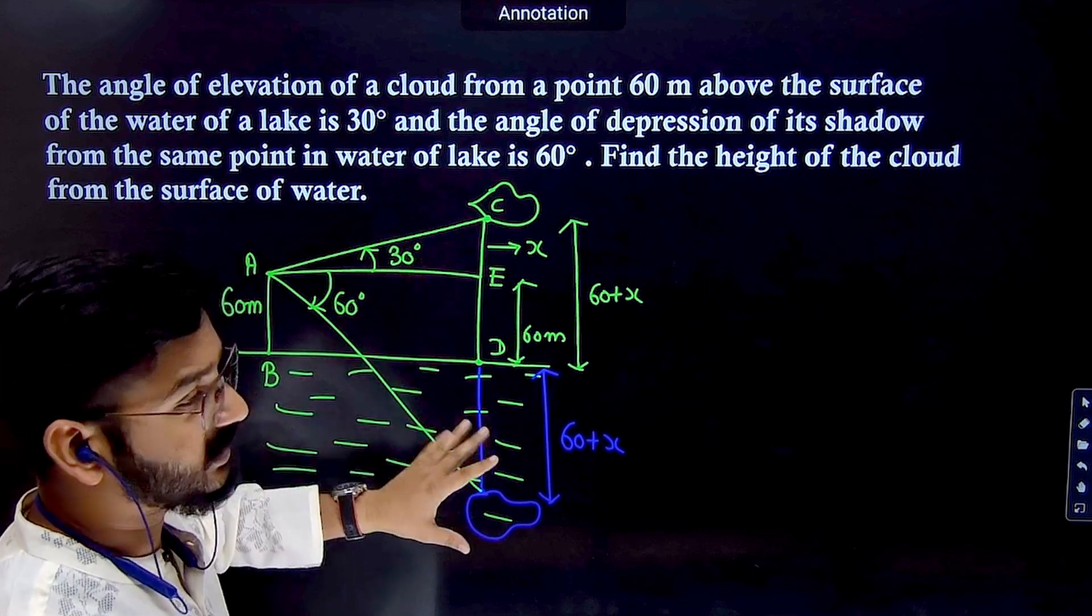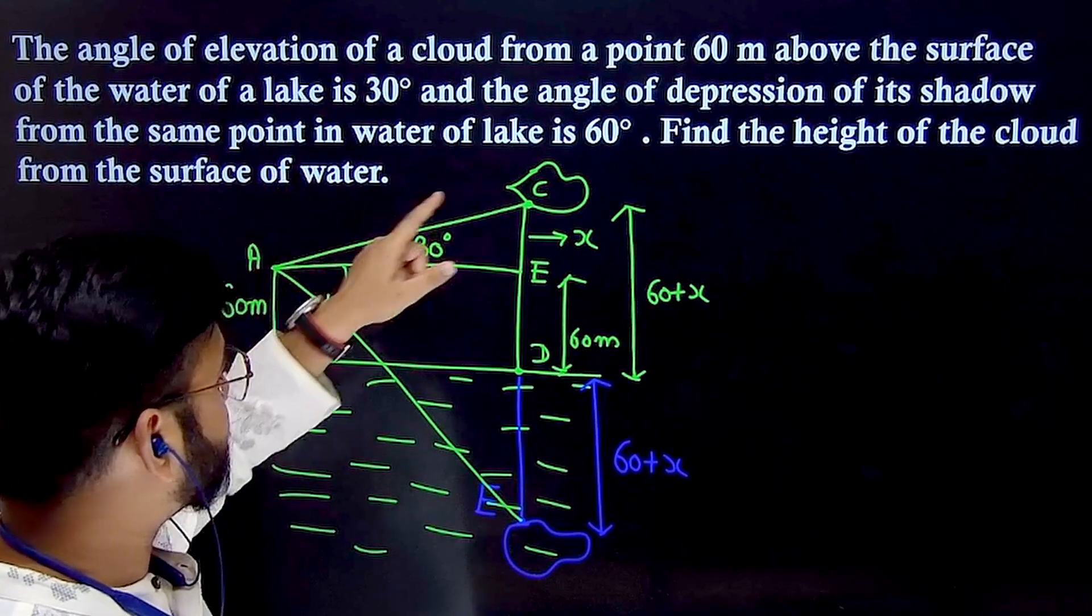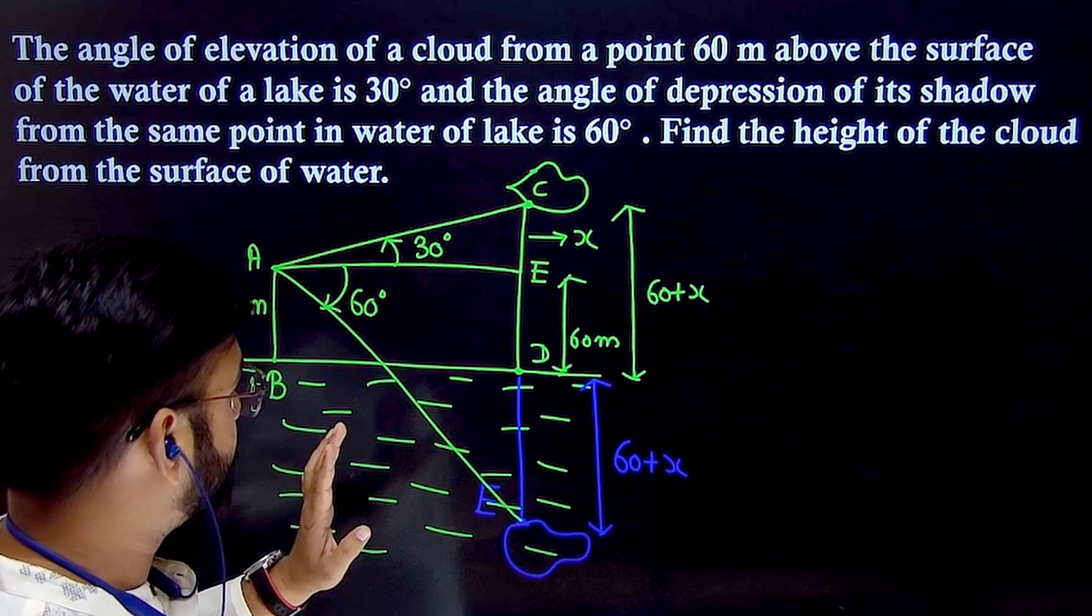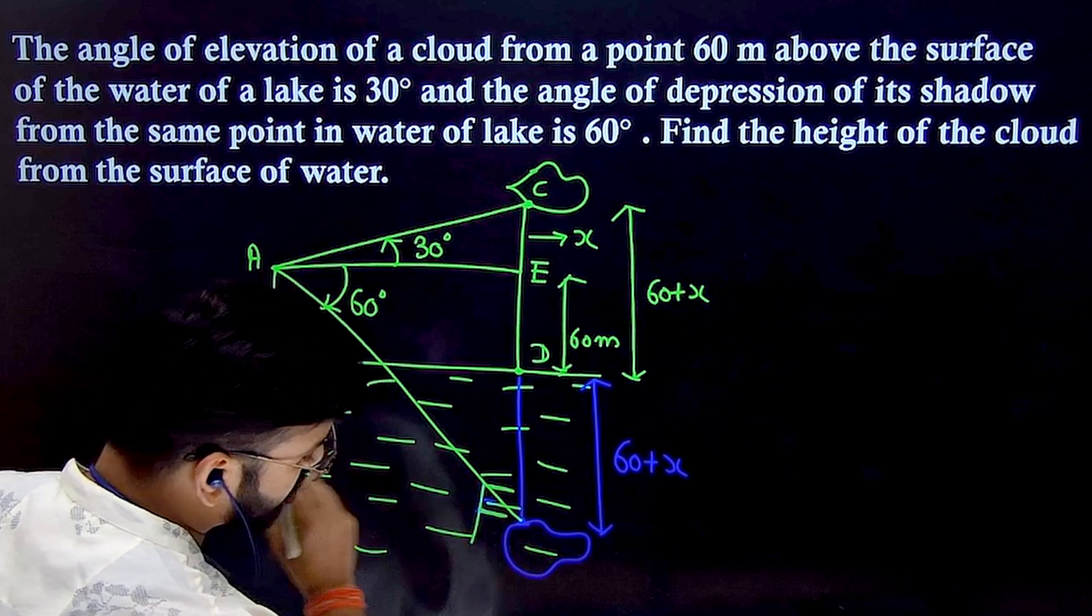This is the complete figure. The first stage is to get the figure perfectly correct. Once the figure is correct, the calculation is simple. Just apply tan θ in triangle ACE and triangle AEF. Let's mark the bottom point as F.